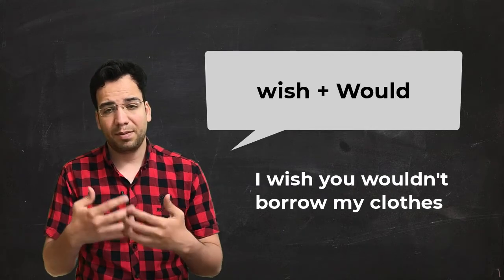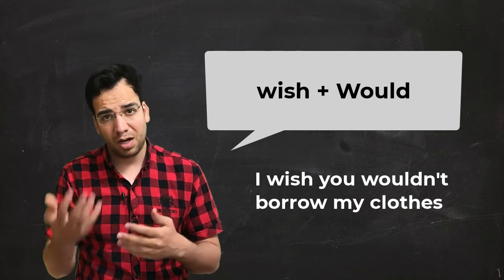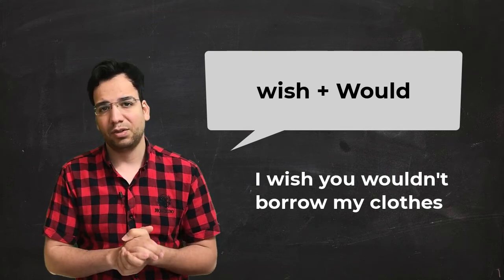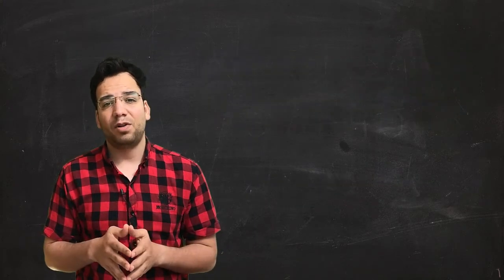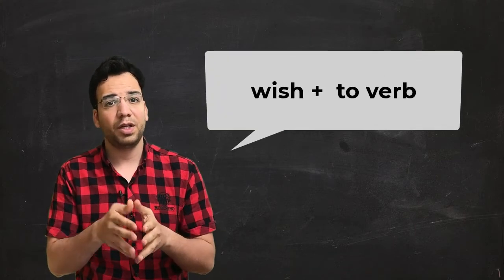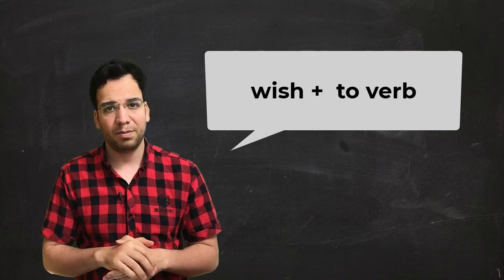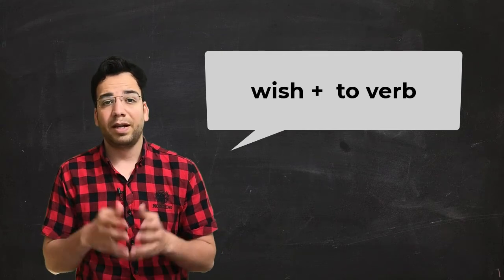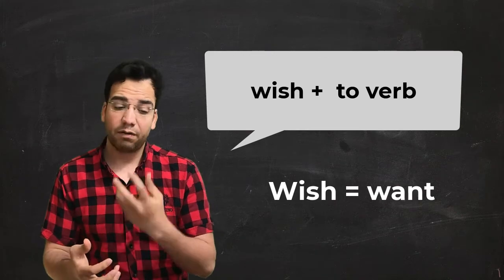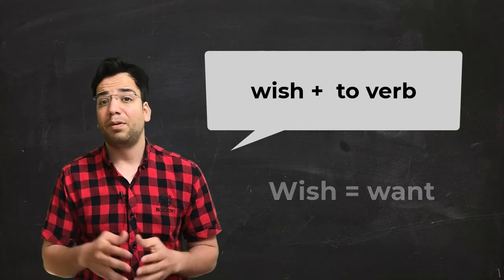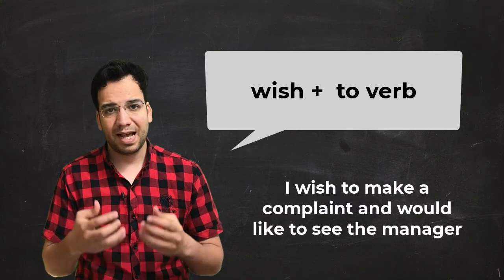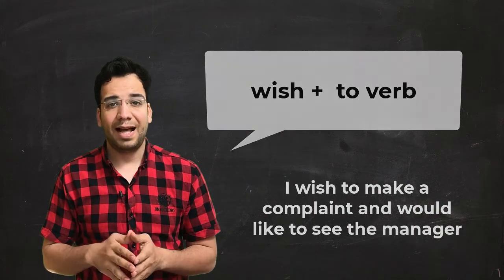As you can see, we want something to happen or we want someone to start or stop doing something — in this situation, we use would with wish. In the last form, we use would with to infinitive. Keep in mind that we can also use wish to express want in a formal situation. For example: I wish to make a complaint and would like to see the manager.